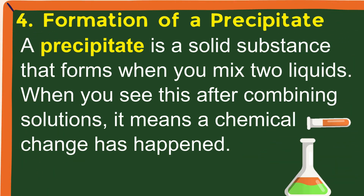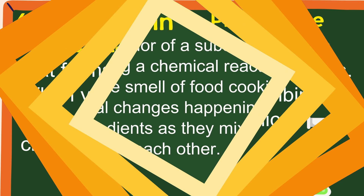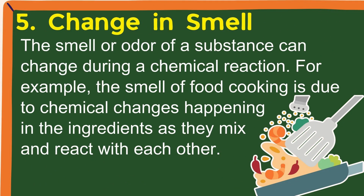4. Formation of a precipitate — a precipitate is a solid substance that forms when you mix two liquids. When you see this after combining solutions, it means a chemical change has happened. 5. Change in smell — the smell or odor of a substance can change during a chemical reaction. For example, the smell of food cooking is due to chemical changes happening in the ingredients as they mix and react with each other.